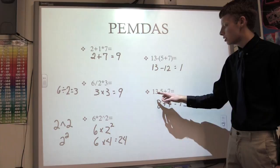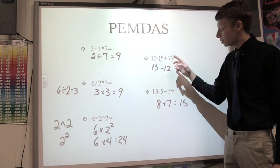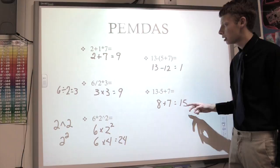This last equation, as you might notice, is similar to this one except without the parentheses. And you have 13 minus 5 plus 7. Now subtraction comes first, so you're going to do it first in the equation. So you're going to get 8 plus 7 and get 15.